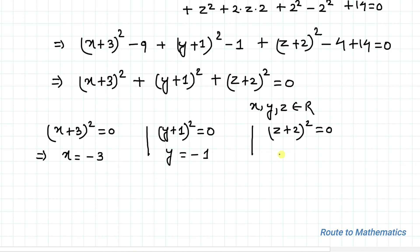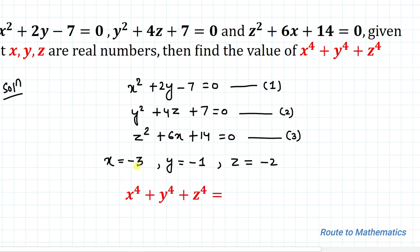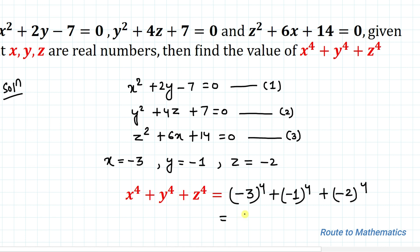We are asked to find x⁴ + y⁴ + z⁴. Substituting the values: (-3)⁴ + (-1)⁴ + (-2)⁴ = 81 + 1 + 16 = 98. So 98 is our answer. I hope you have understood the solution. Thanks for watching — please subscribe to my channel and hit the like button for more such interesting videos!